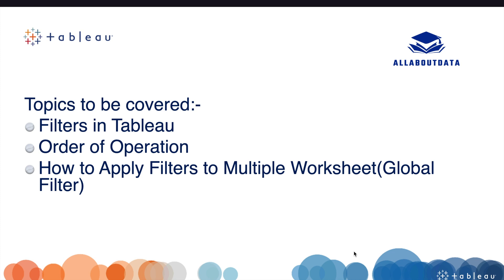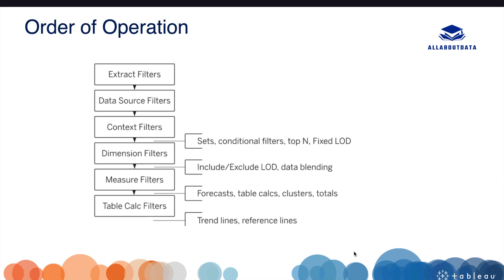What is a filter? A filter is used to minimize our data and show only relevant data. There are various types of filters used in Tableau: dimension filter, measure filter, context filter, data source filter, and extract filter. The order of operations of filters is: extract filter, then data source filter, then context filter, then dimension filter, then measure filter, then table calculation filter.